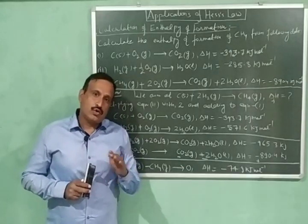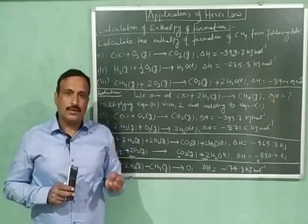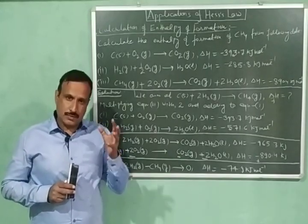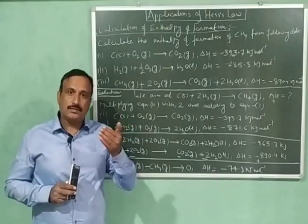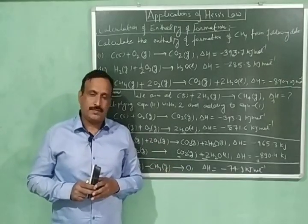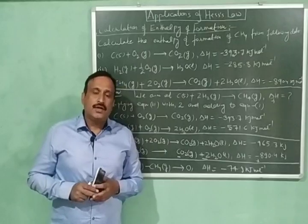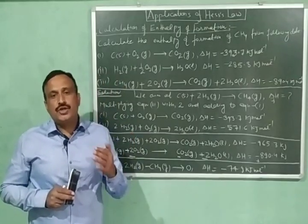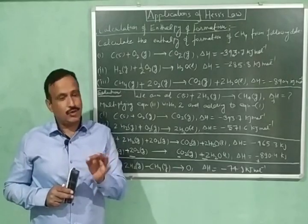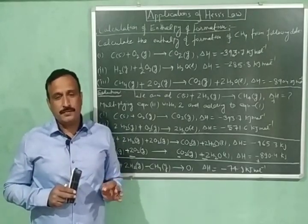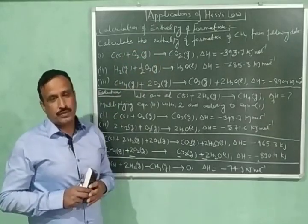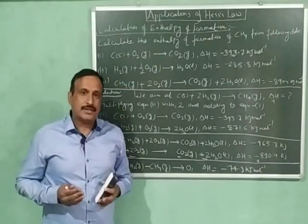As a consequence of Hess law, the various thermochemical equations can be added, subtracted, multiplied, or divided just like simple algebraic equations. As a result, we can calculate the enthalpy changes of many reactions for which direct measurement is not possible. So here we are calculating the enthalpy of formation, and let us explain it with an example.